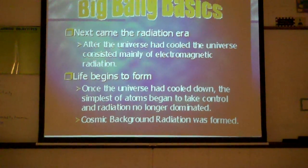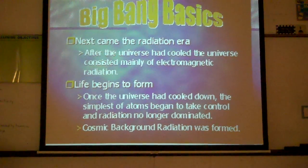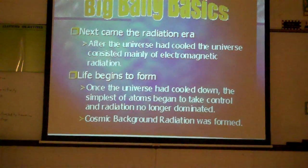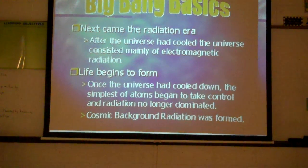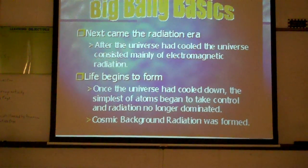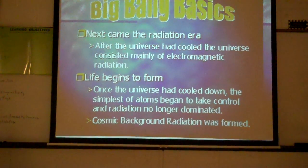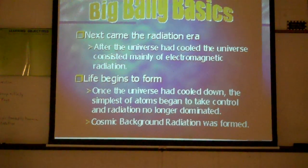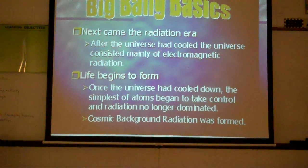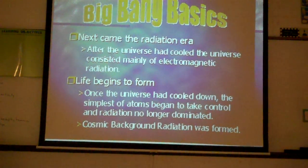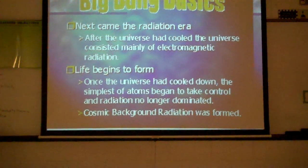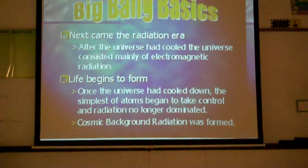Then came the radiation era. This is when the universe began to cool down, and it consisted mainly of electromagnetic radiation. This is also the place where life begins to form, because as the universe cooled down, the simplest of atoms began to take control and radiation no longer dominated. This is what we call cosmic background radiation, which is also called the microwaves.